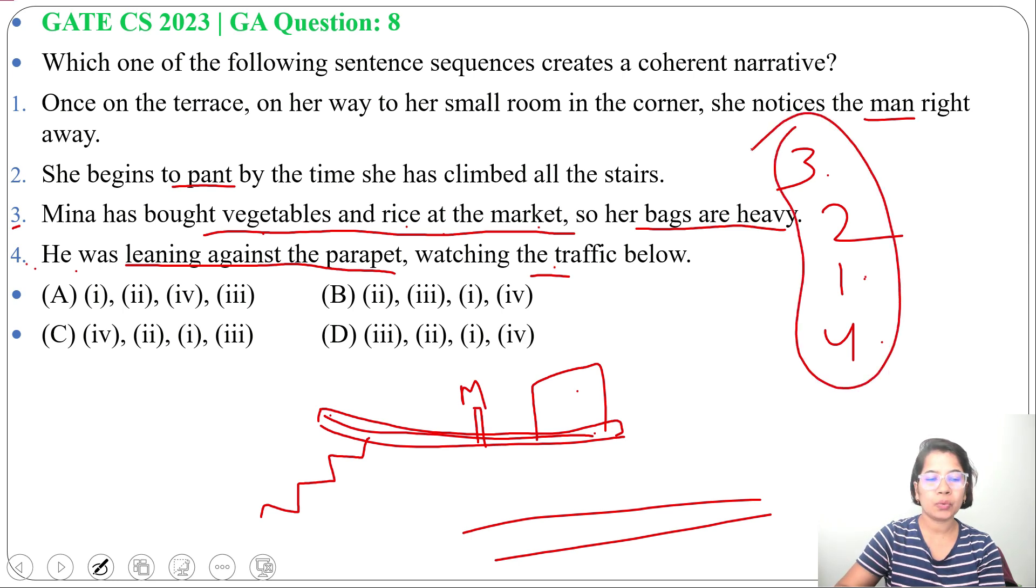So the sequence should be three, two, one, four. So it's present in option D. So the answer will be option D: three, two, one, four.